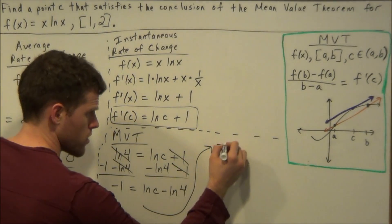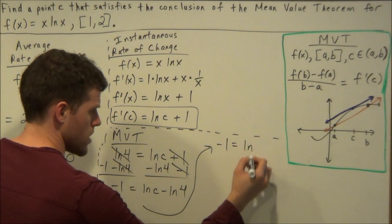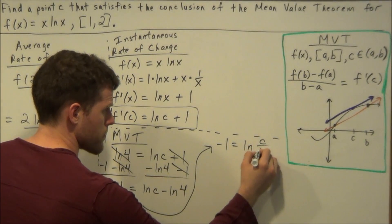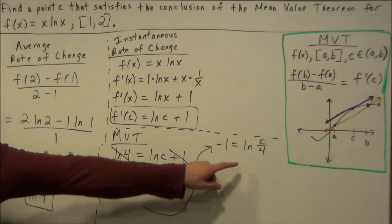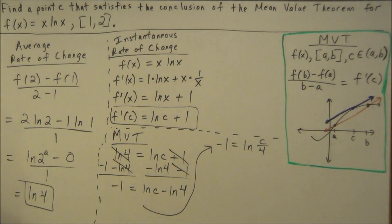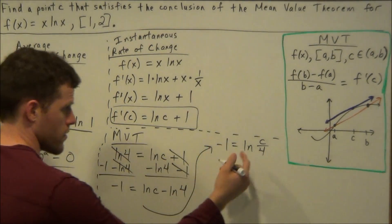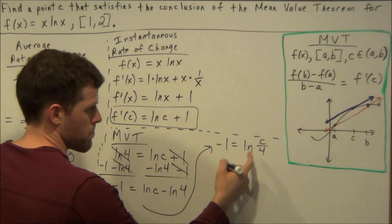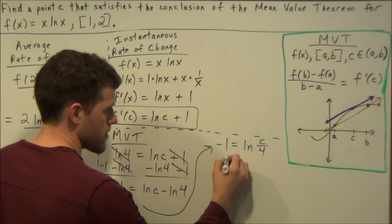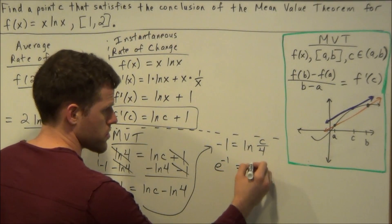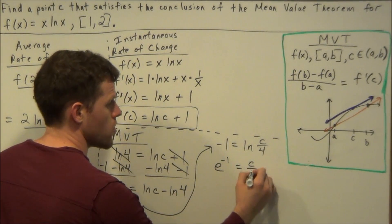So this will tell us negative 1 equals natural log of c divided by 4. And then from this step here, we could use the definition of a log that we could rewrite it as an exponent. The base of the natural log is e. The exponent here would be negative 1, and this equals the inner term c over 4.